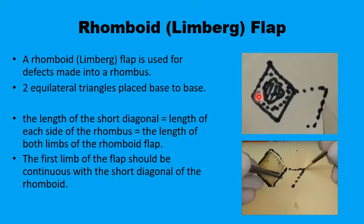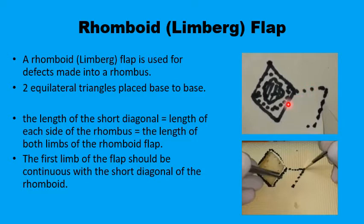The steps in creating the flap: extend the short diagonal — bisecting the 120-degree angle — to an equal length as one of the sides or the short diagonal itself, then draw a line from there parallel to the adjacent side of the rhomboid. This line has the same length as the first limb and as all the sides of the parallelogram. These two rhomboids are almost identical and can be transferred easily from the donor site into the defect, while the donor site is then closed primarily.